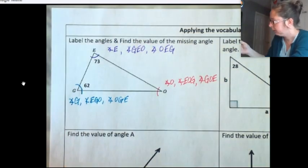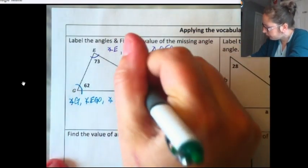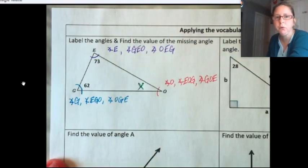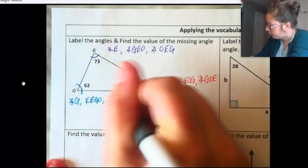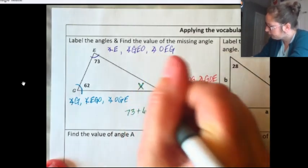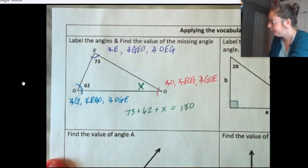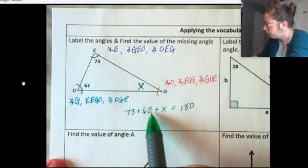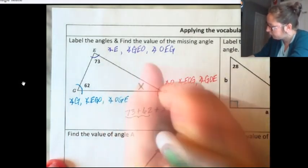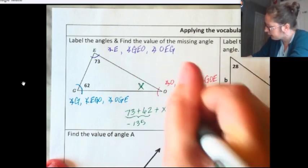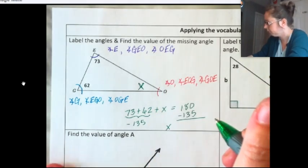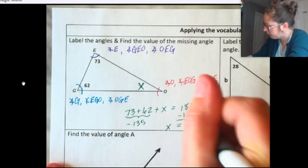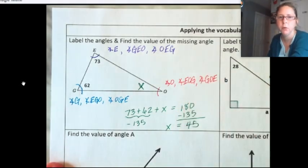Now let me switch over to green. We're going to find the value of this missing angle. We know that the sum of all three angle measures of any triangle equals 180 degrees. So 73 plus 62 plus X equals 180. That gives us 135, so let's subtract 135 from both sides, and I get 45 — so angle X is 45 degrees.